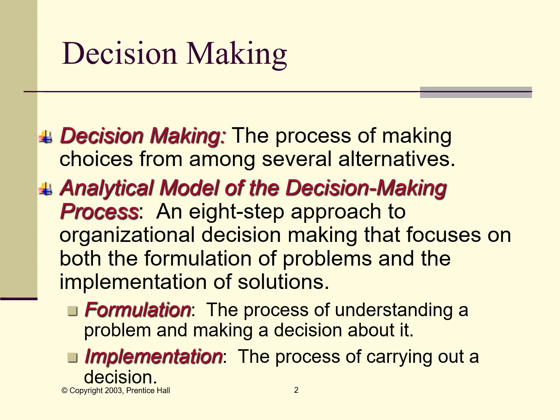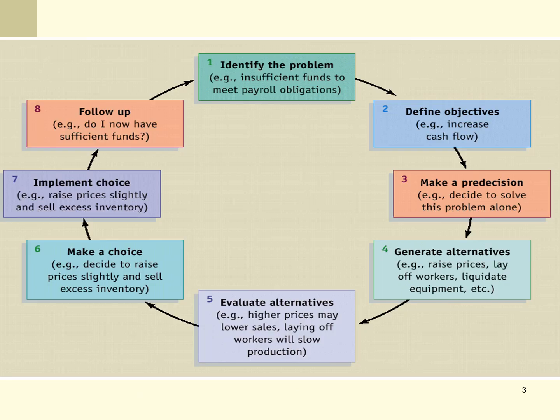Once we have an objective list of potential answers to the problem, we also want to evaluate them on a cost-versus-benefit ratio. Once we've decided on what makes the most sense, we need to implement the process of carrying out that decision. This is an eight-step process. The first step is to identify the problem — for example, there are insufficient funds to meet payroll obligations. We want to make sure we can define and state what the problem is.